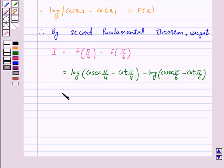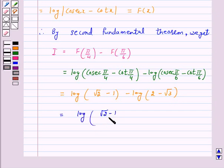And this equals log(√2 - 1) minus log(2 - √3). Now log m minus log n equals log(m/n). So we get log((√2 - 1)/(2 - √3)).